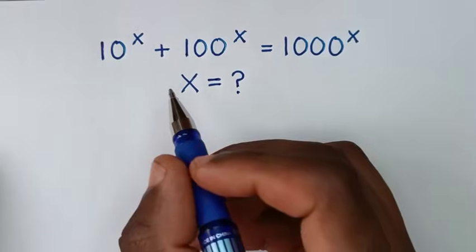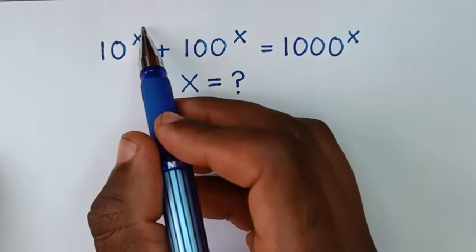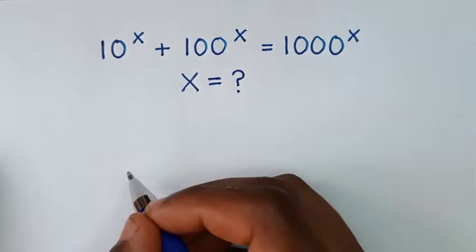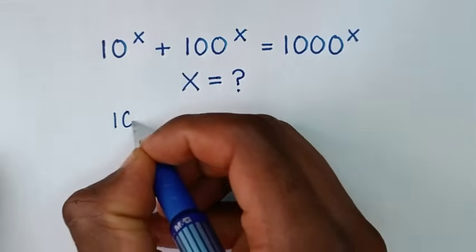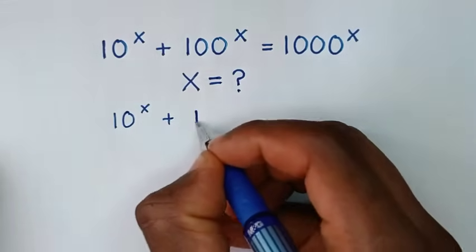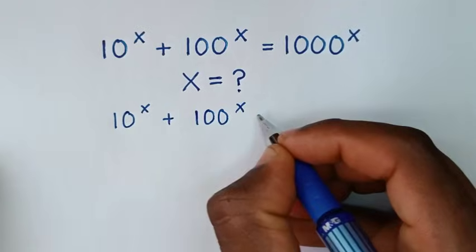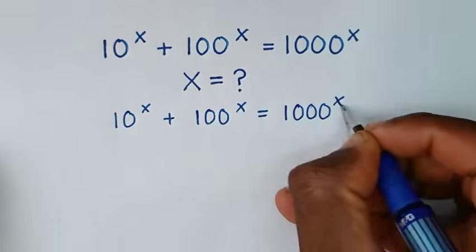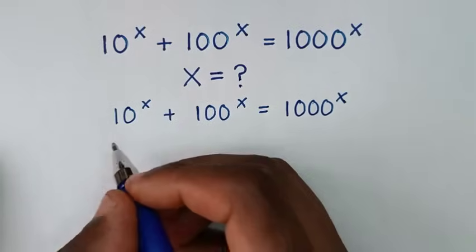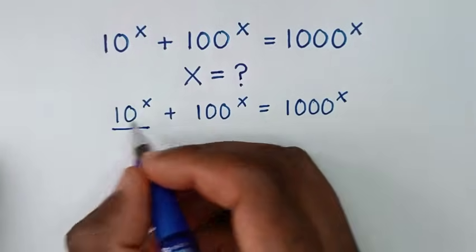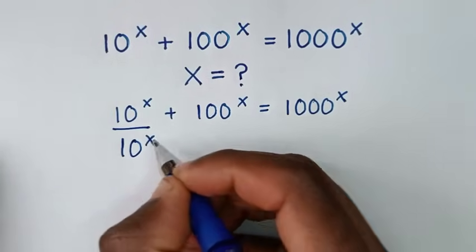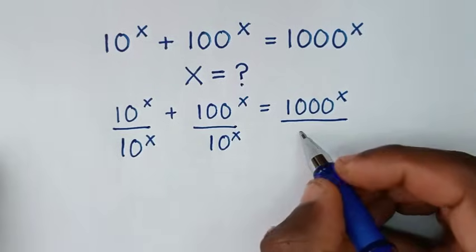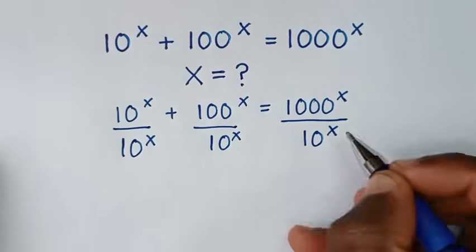In the first step we'll start by dividing by the smallest exponent, 10 power of x, on both sides. So we write our problem: 10 power of x plus 100 power of x is equal to 1000 power of x, then divide every term by 10 power of x.